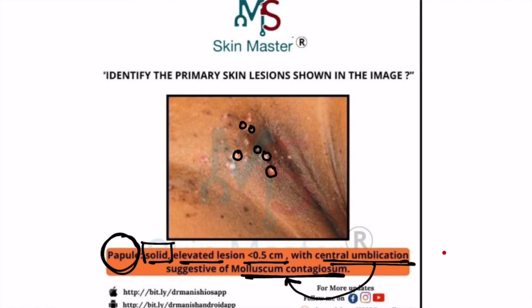So these are known as papules. In my last video — I will give you the link in the eye button — I told you that the morphology of the lesion is very important to diagnose any condition. Here the morphology or the primary skin lesion is a papule. So first you need to look for a papule, then the central umbilication, and then you can come to the diagnosis of molluscum contagiosum, which is a viral condition caused by pox virus.